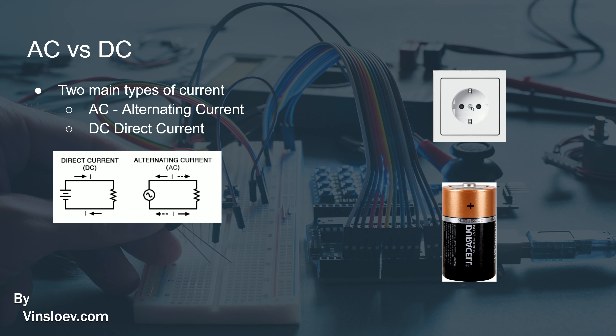That power is then distributed through the wall outlet to whatever device you plug into it. The advantage of AC is that when distributing power over distance, it is a lot easier to change the voltage using a transformer, and we also benefit from the current changing throughout the travel of that distance.